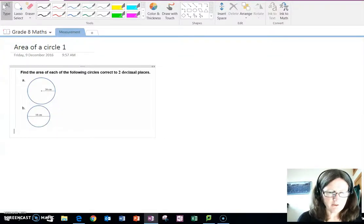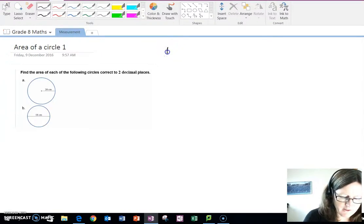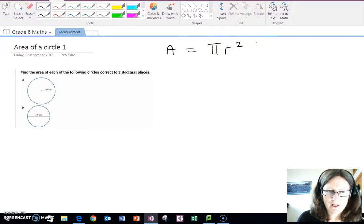Okay, now let's look at the area of a circle. So I have two examples here. There is one formula for the area of a circle, and that is area equals pi r squared, where r stands for the radius.